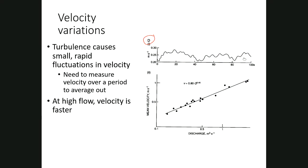As discharge goes up, Q equals width times depth times velocity — not only does depth increase as there's more flow and width goes up depending on channel shape, but velocity also increases. As the channel gets bigger with more water, less of the water is in contact with the bed or banks, so less of it experiences drag or friction, and more of it is in the free stream. This example data shows what this might look like for a particular stream cross section.